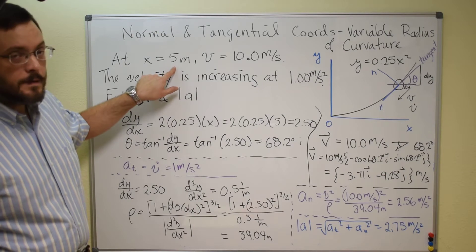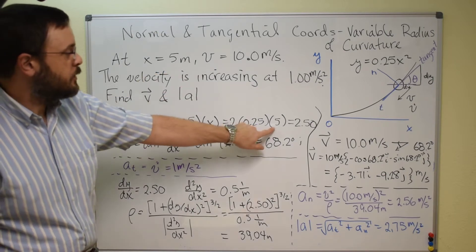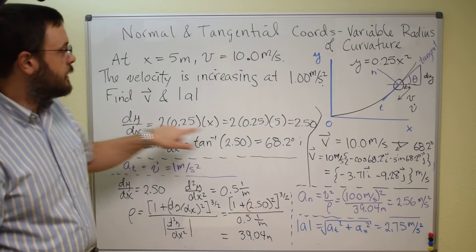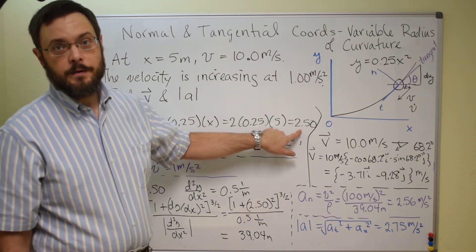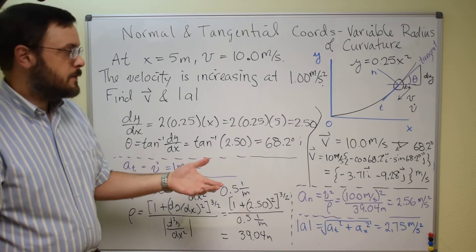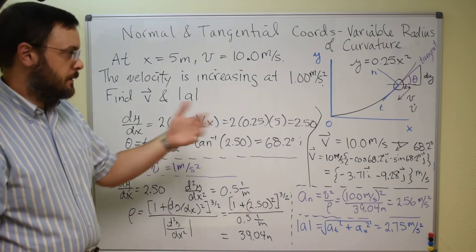We're looking at x is equal to 5 meters, so we plug in the 5 there, and then for our dy/dx we get 2.5, and remember dy/dx is unitless because it's a change in y over change in x, so it's a length over length.